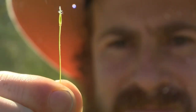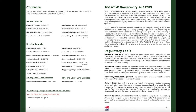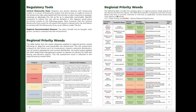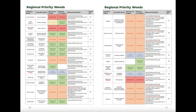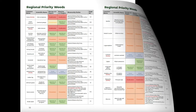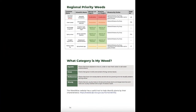This edition of the Weed Guide includes the new legislation changes of the New South Wales Biosecurity Act of 2015. Information about the Act of 2015, regulatory tools and the Regional Priority Weeds table can be found on pages 5 through to 14.